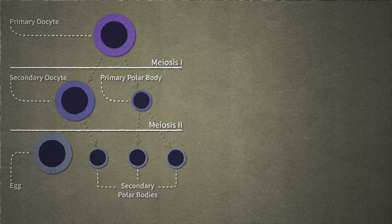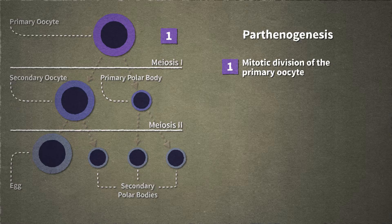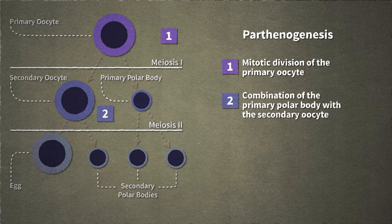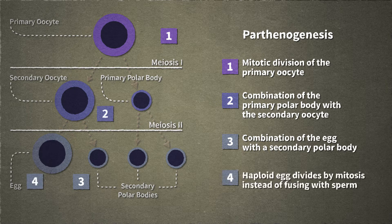We will now discuss four ways that this process can be altered to produce parthenogenetic offspring: mitotic division of the primary oocyte; combination of the primary polar body with the secondary oocyte; combination of the egg with the secondary polar body; and the haploid egg divides by mitosis instead of fusing with sperm.